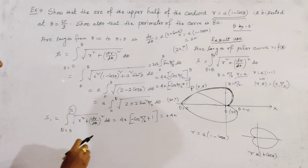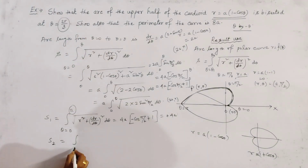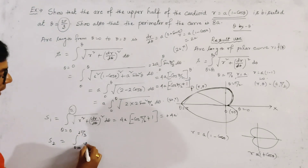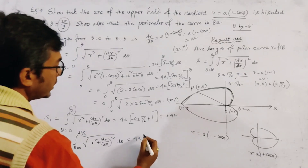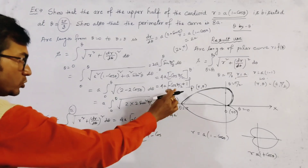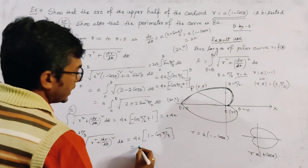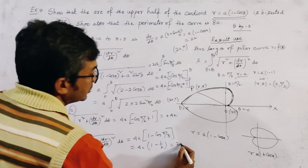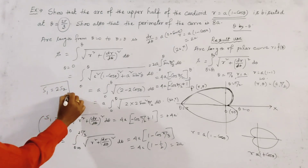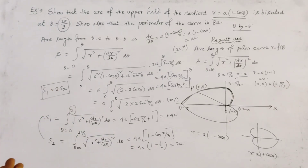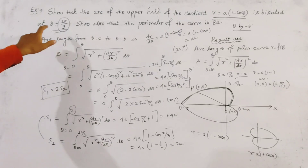Now to find the arc from θ = 0 to θ = 2π/3, we compute S₂ = 4A(1 − cos(π/3)) = 4A(1 − 1/2) = 2A. From these two results, S₁ = 4A = 2 × 2A = 2·S₂. This proves that the upper half of the cardioid is bisected at the point θ = 2π/3.